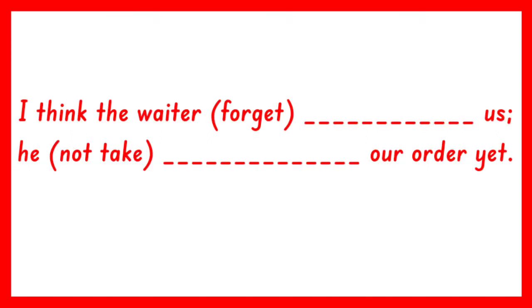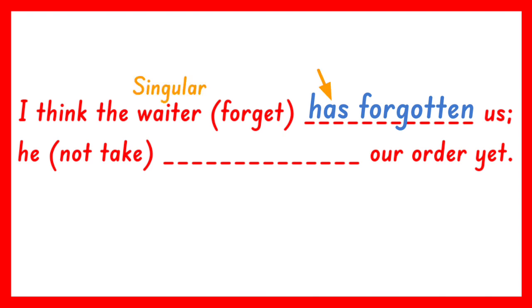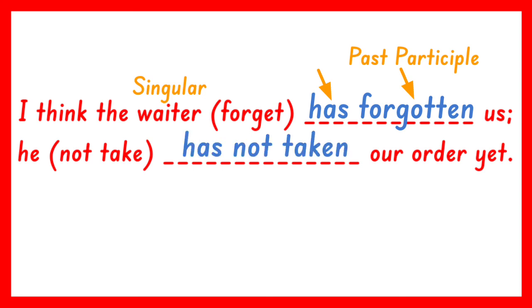How about this? I think the waiter (forget) — he (not take) our order yet. For the first verb, the appropriate present perfect form is has forgotten. Has is used because waiter is singular, and forgotten is the past participle of forget. For the second one, the appropriate present perfect form is has not taken. Has is used because the pronoun he is singular, and taken is the past participle of take.